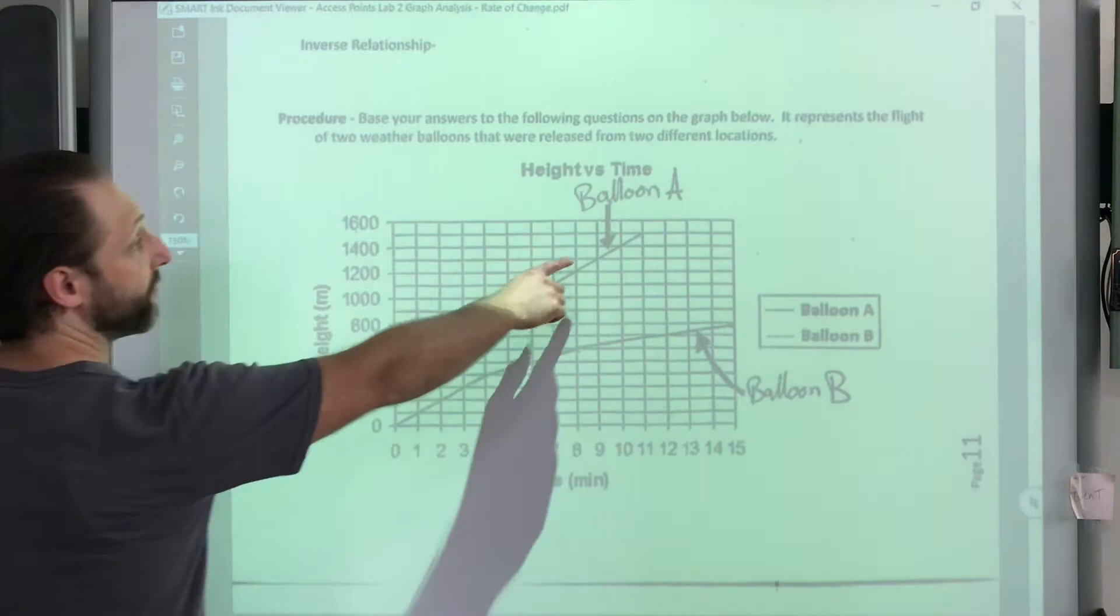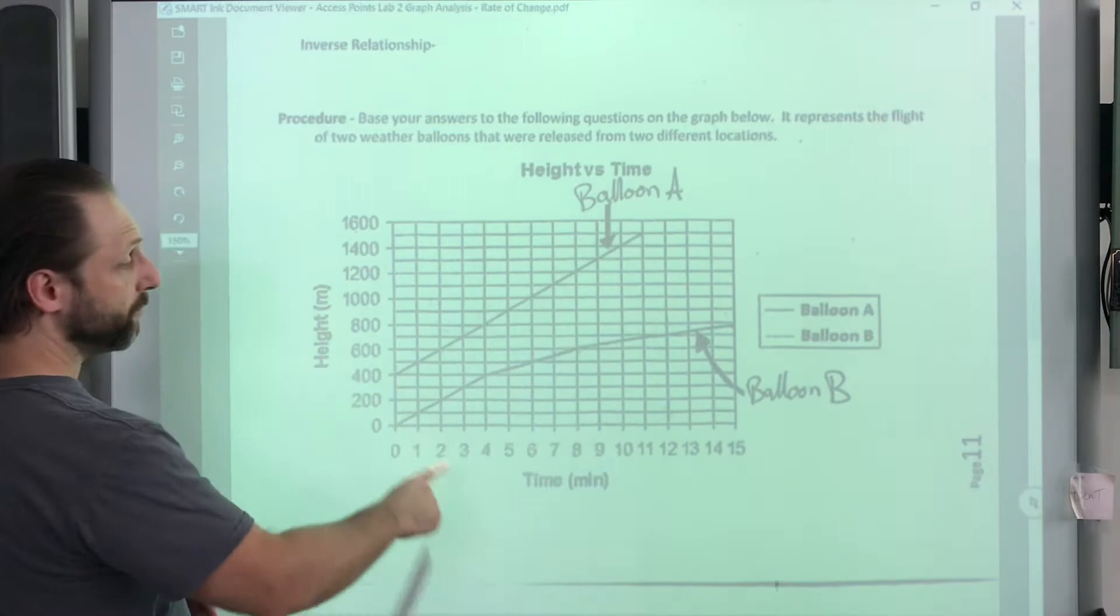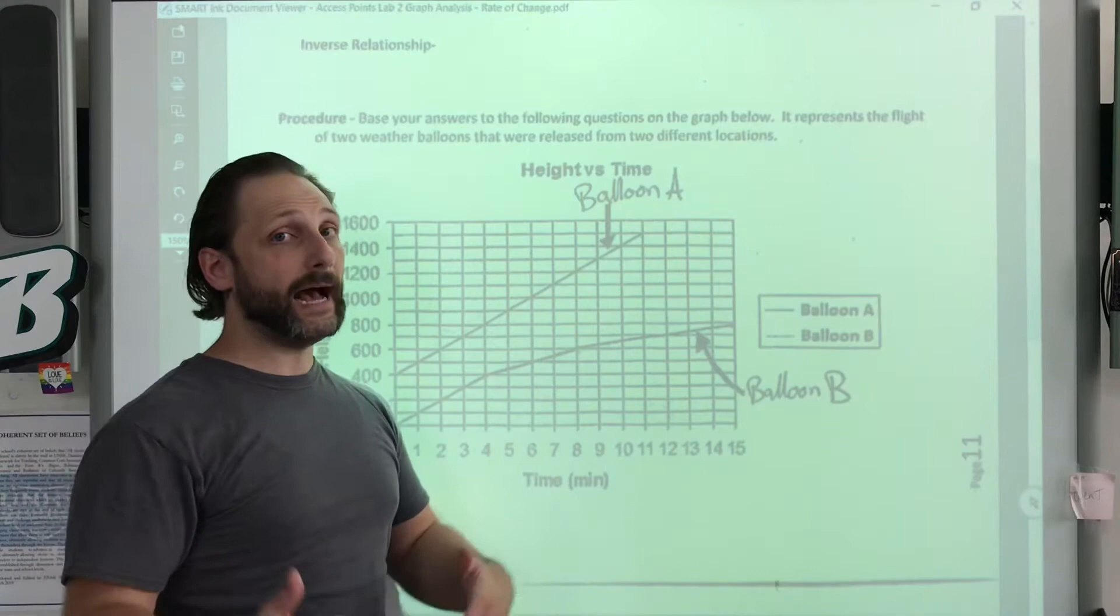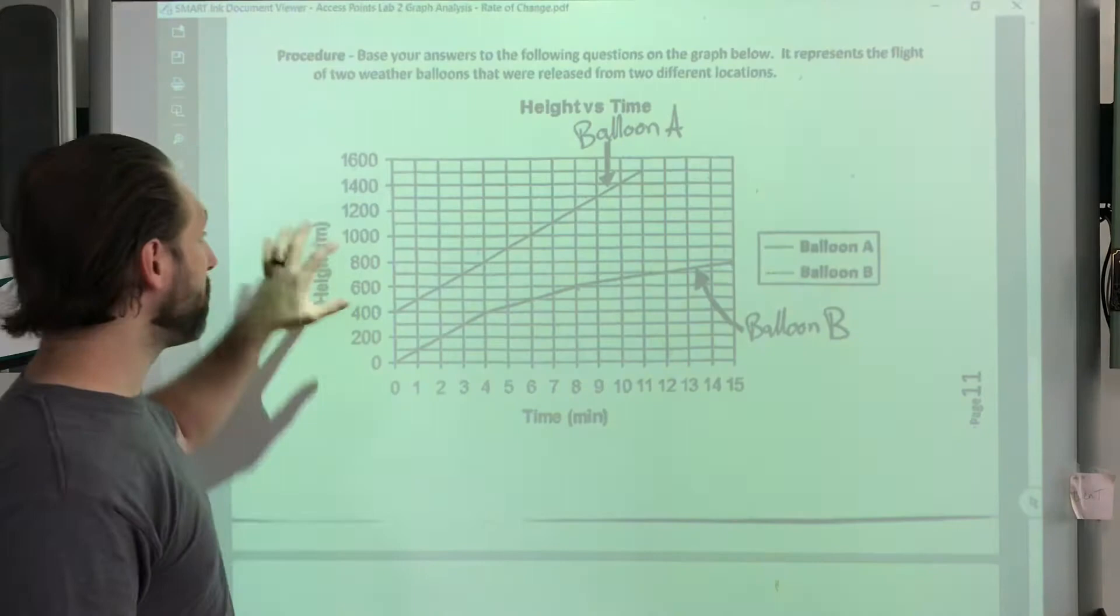So here I have made sure to highlight for you that this line here is balloon A, the data for balloon A. You have a starting position and an ending position. Balloon B, you have a starting position and an ending position. Both of these graph lines are different for different reasons but you'll be calculating the rate of change to see how it is different. You have time on your x-axis in minutes. You have height in meters on your y-axis. So you have your units for your field value and your time.